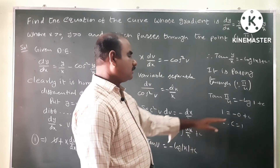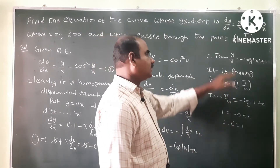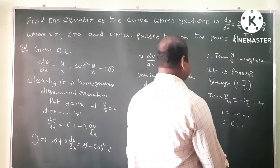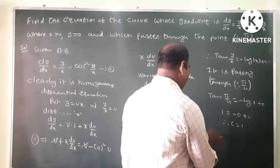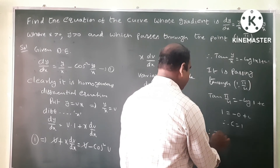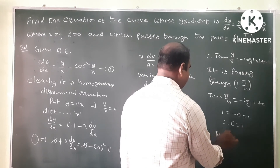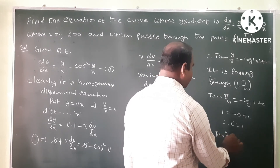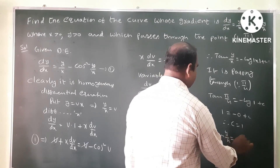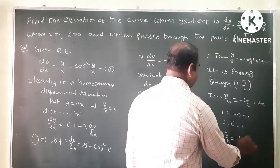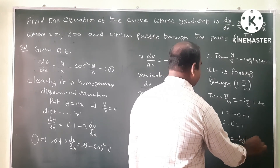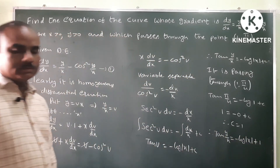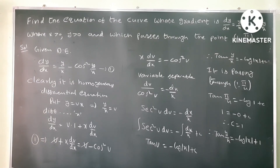Now substitute the value of c into the equation. The required solution is: tan(y/x) equals minus log mod x plus 1. That is the final answer.